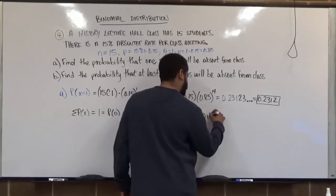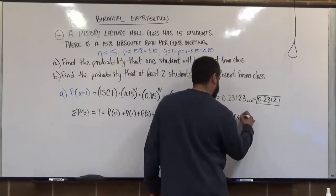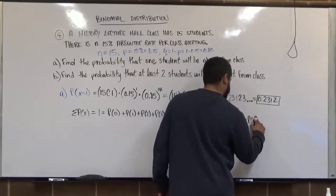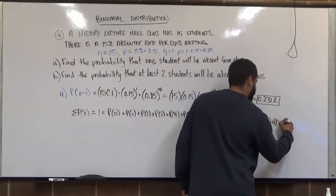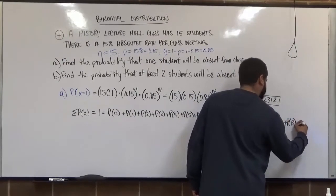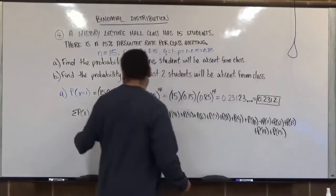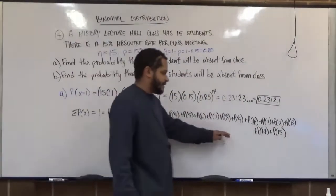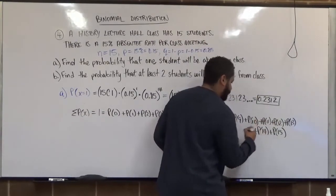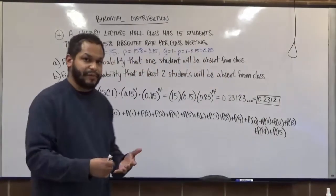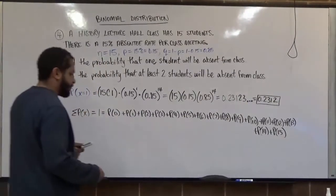That's because the sum of every probability should always add up to 1, as we know from discrete probabilities. Binomial probability distributions run on the same condition as discrete probabilities because they run with discrete numbers. For problem B, we want to find the probability that at least 2 students will be absent, meaning X is greater than or equal to 2.